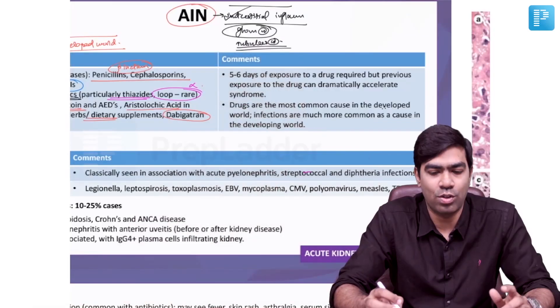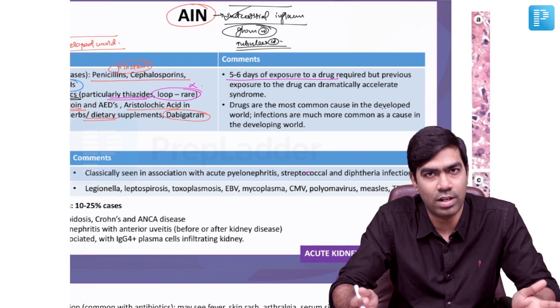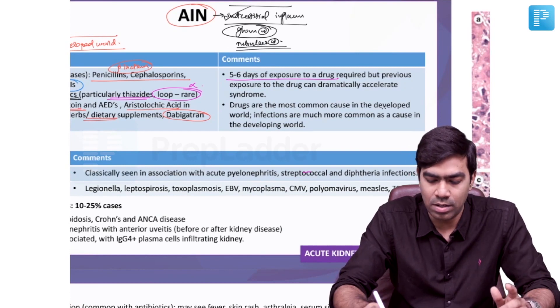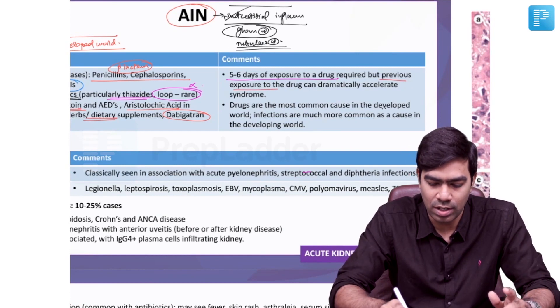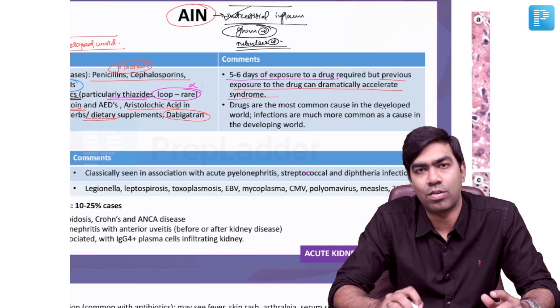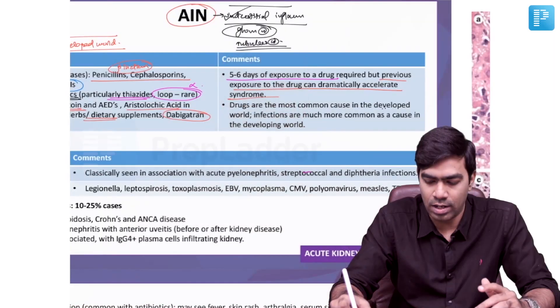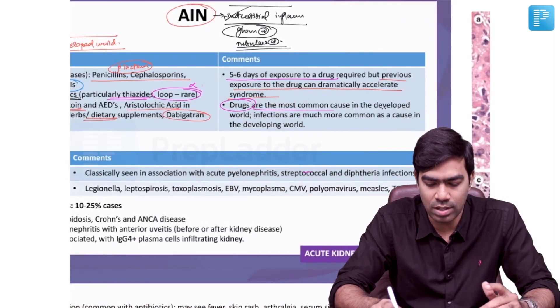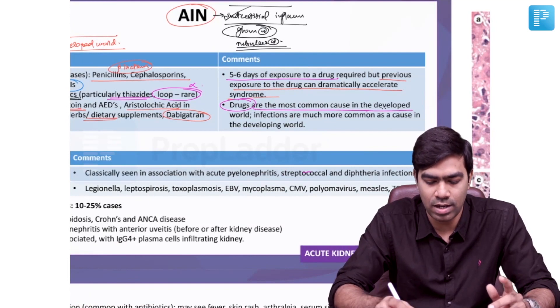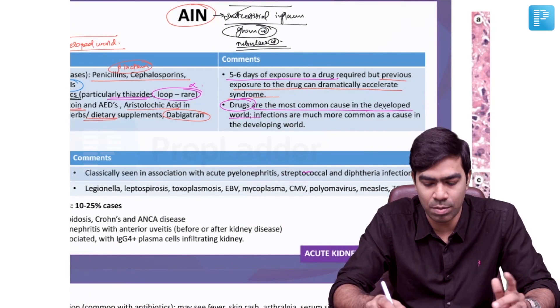In general, 5 to 6 days of exposure to a particular drug is generally required, but previous exposure to the drug can dramatically accelerate the syndrome. Which means, if you are getting acute interstitial nephritis after a couple of doses or within a couple of days of exposure to a particular drug, then you can think about prior exposure and sensitization to that drug. Drugs are the most common cause of AIN in the developed world and in urban populations.